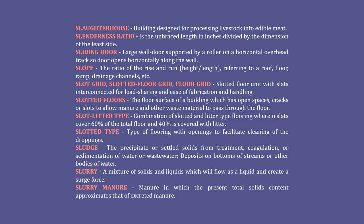Slenderness ratio: the unbraced length in inches divided by the dimension of the least side. Sliding door: a large wall door supported by a roller on a horizontal overhead track — the door opens horizontally along the wall. Slope: the ratio of the rise and run (height or length), referring to a roof, floor, ramp, drainage channels, etc.